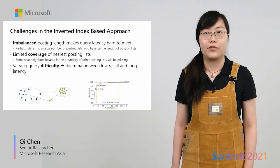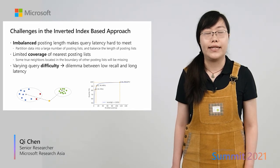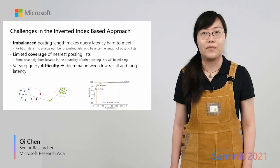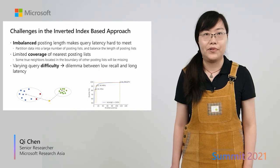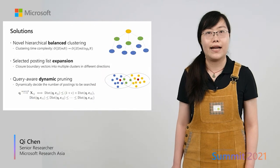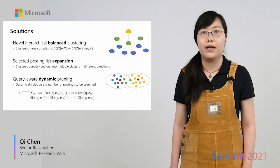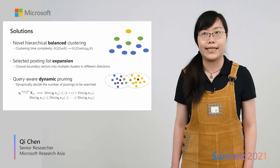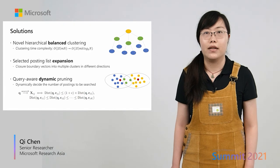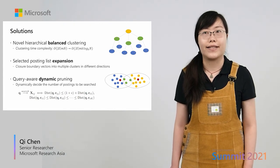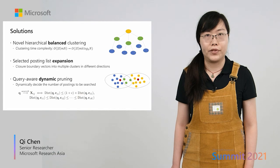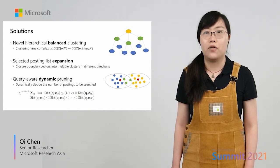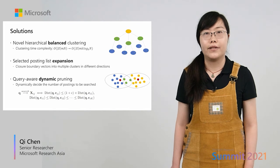All of the above challenges are the reason why all previous inverted index-based solutions adopt lossy data compression, storing all compressed vectors and the corresponding posting lists in memory. In SPTAC++, we propose three novel solutions to address these three challenges. To partition data into a large number of posting lists and balance their lengths, we introduce a novel hierarchical balanced clustering, which can fast divide data into a large number of balanced posting lists. Due to time limitations, the details are not covered here — please refer to our paper.